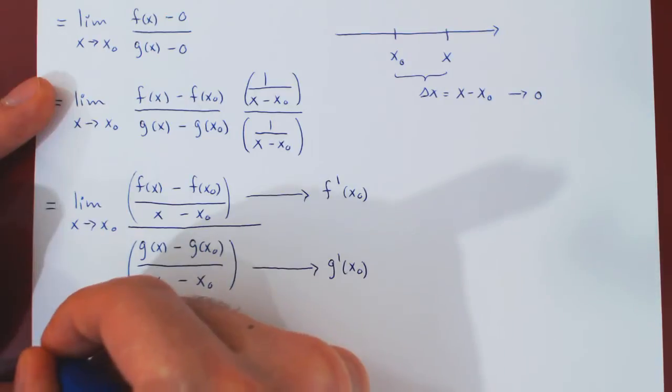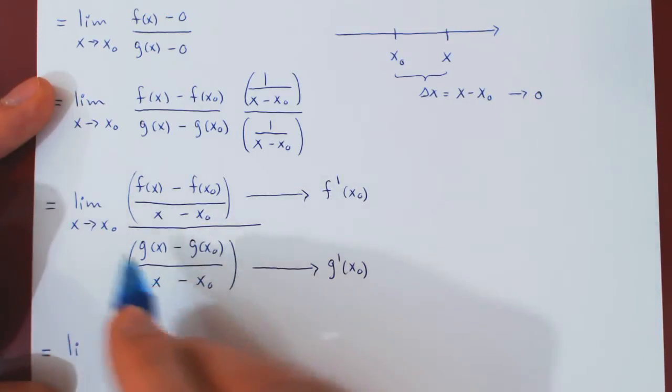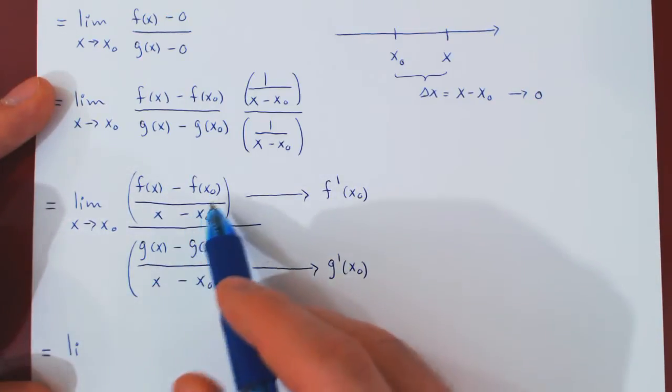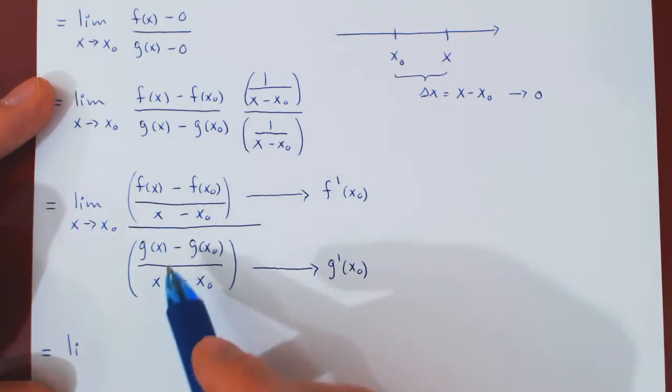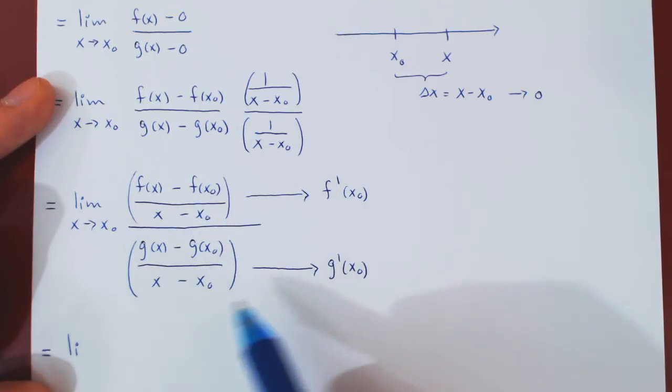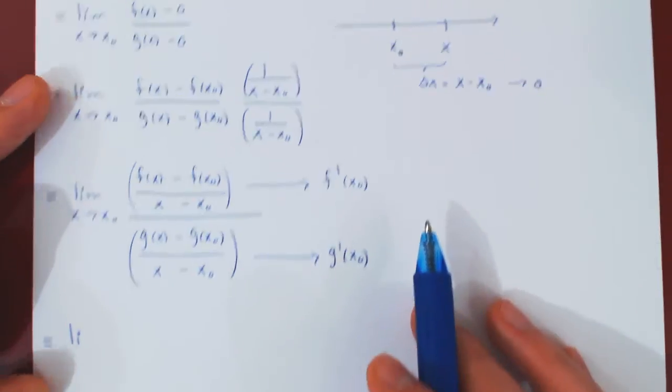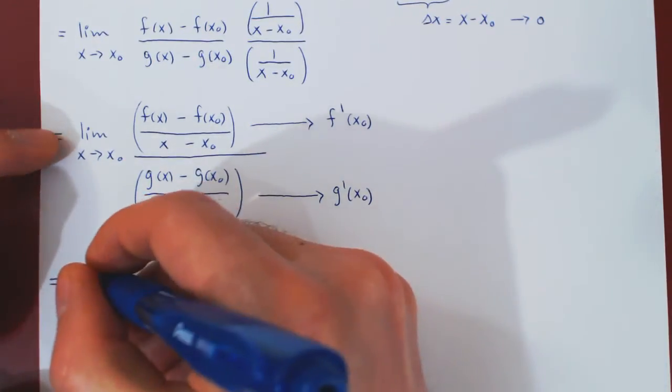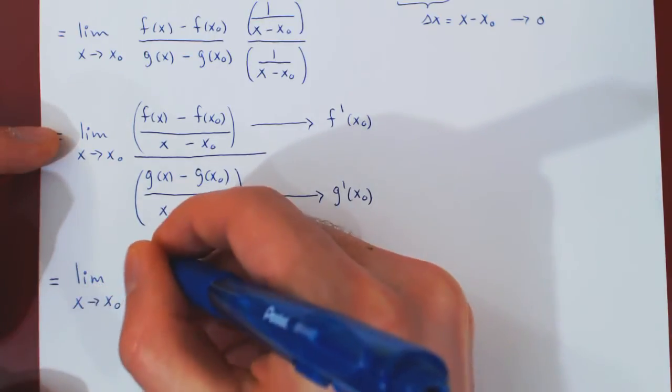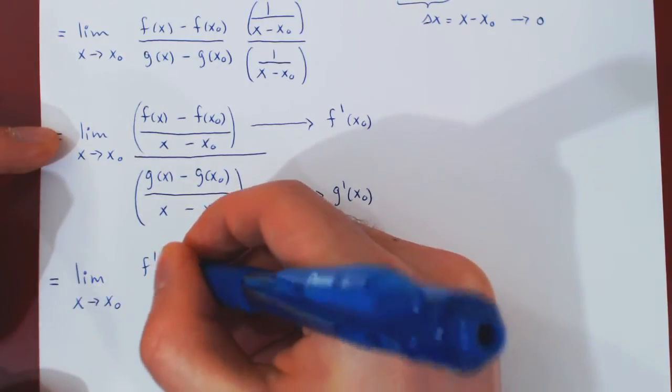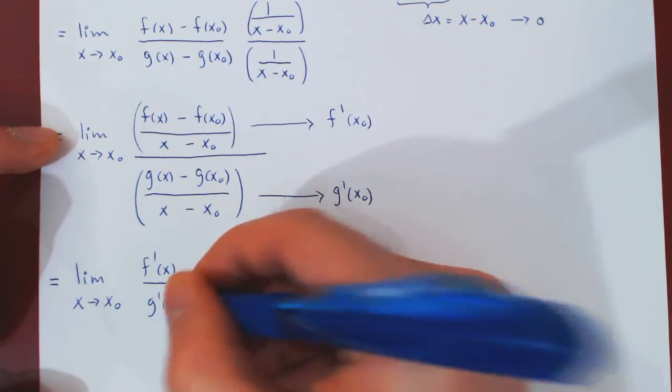Therefore, the limit, as the numerator approaches the derivative of f at x₀ and the denominator approaches the derivative of g at x₀, should equal the limit as x approaches x₀ of f'(x)/g'(x).